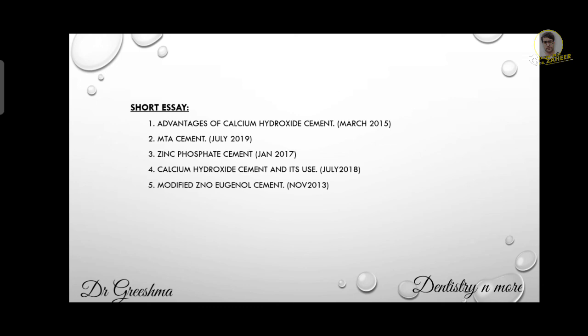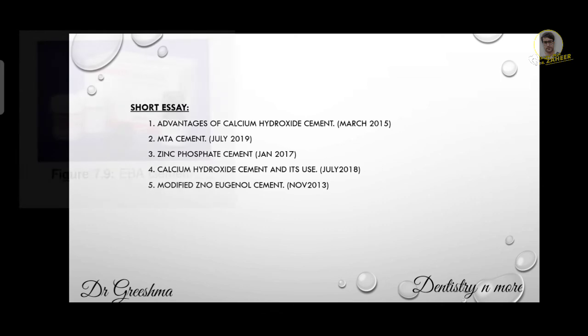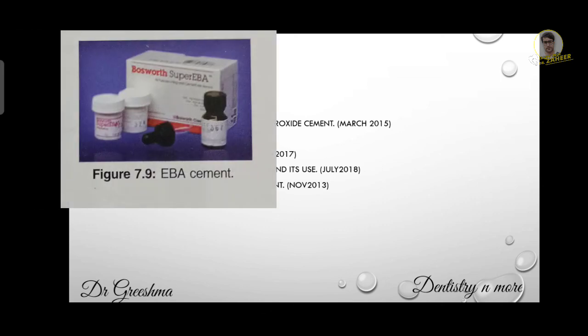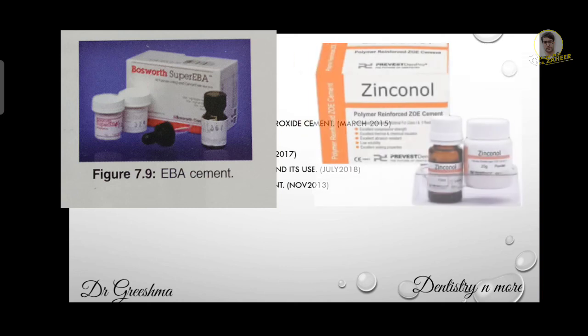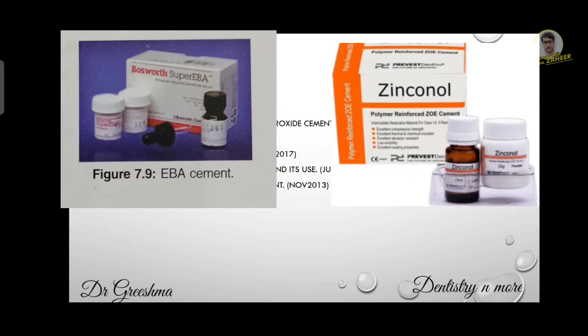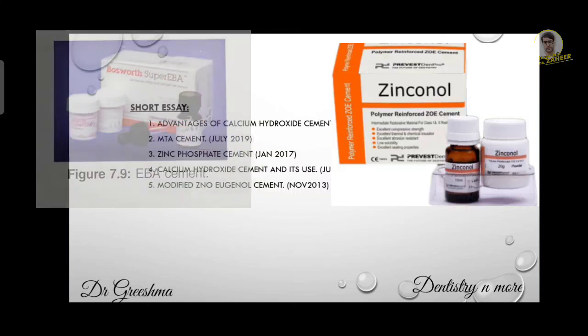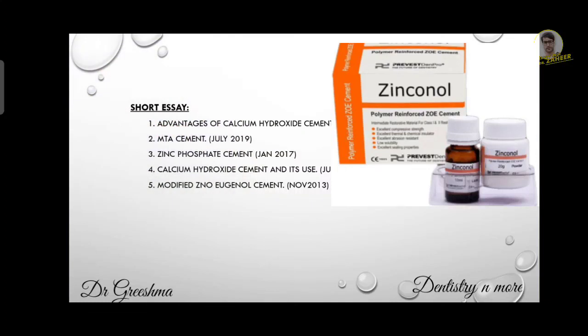The fifth question is modified zinc oxide eugenol cement. Modified zinc oxide eugenol cements are EBA alumina-modified cements and polymer-reinforced cements. EBA alumina-modified cements are available in white powder and pinkish liquid form, and are used for long-term cementation and temporary and intermediate restorations. Polymer-reinforced zinc oxide eugenol cement is used as a base and temporary filling material, and also as a luting agent.